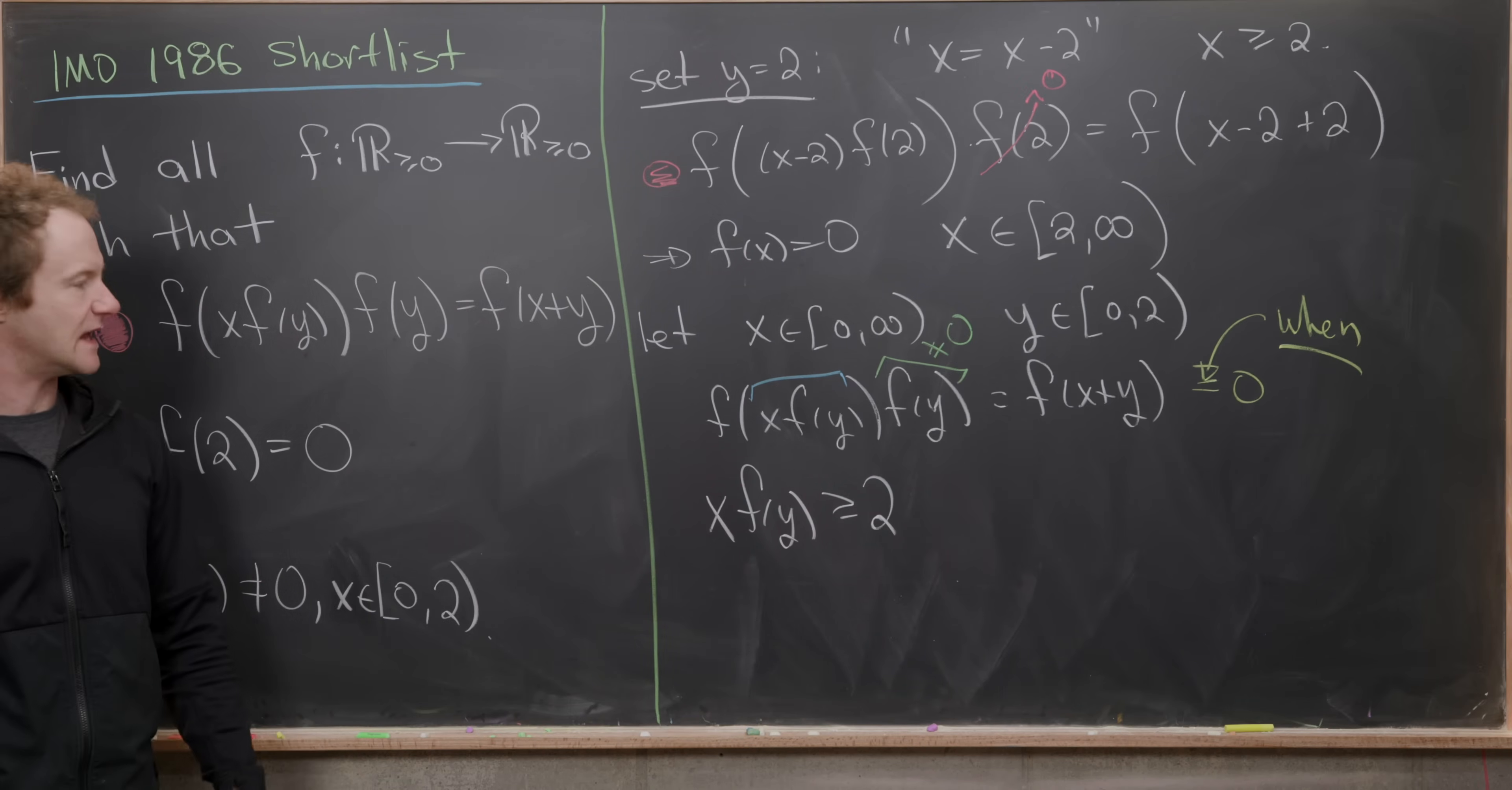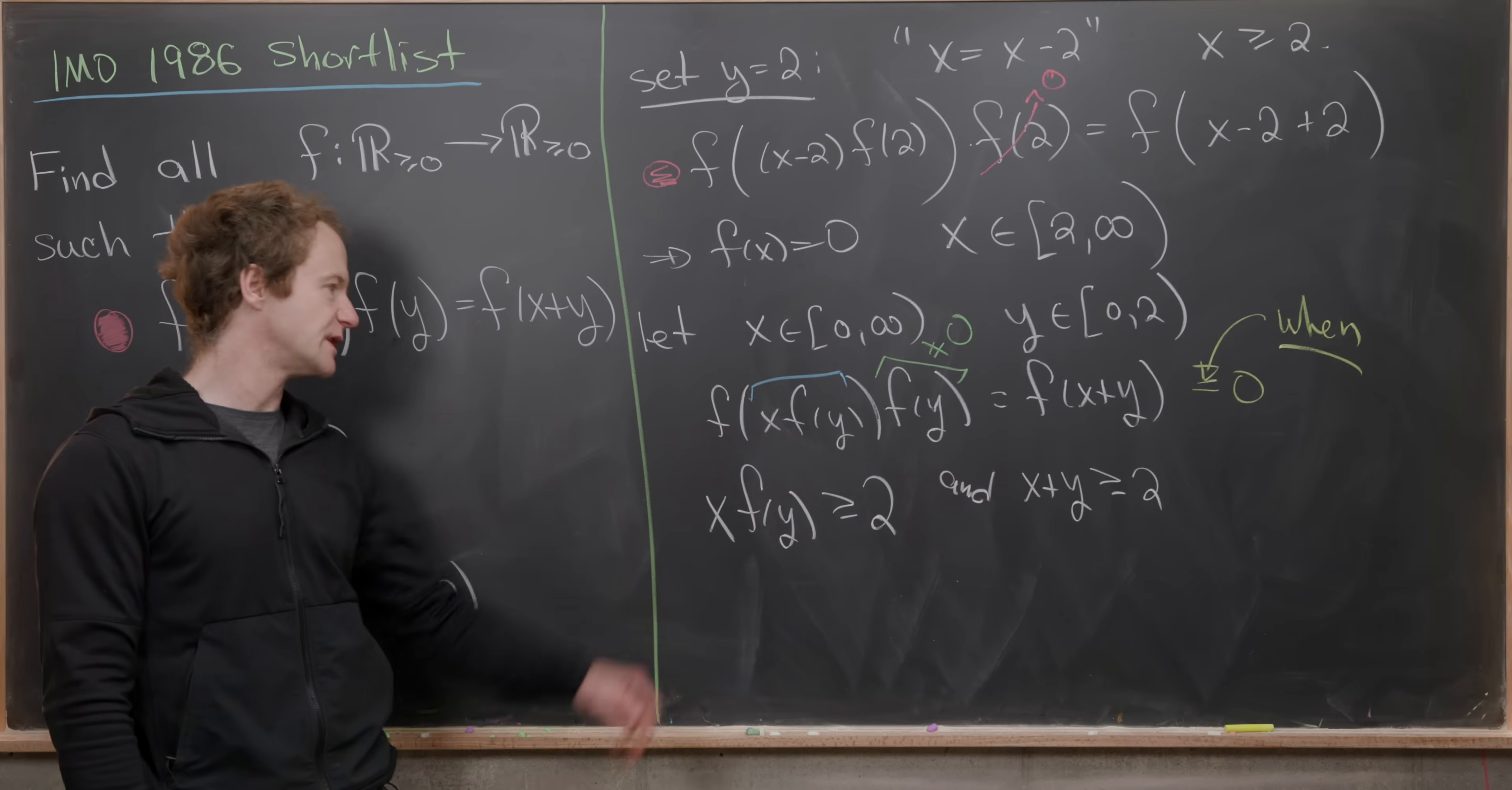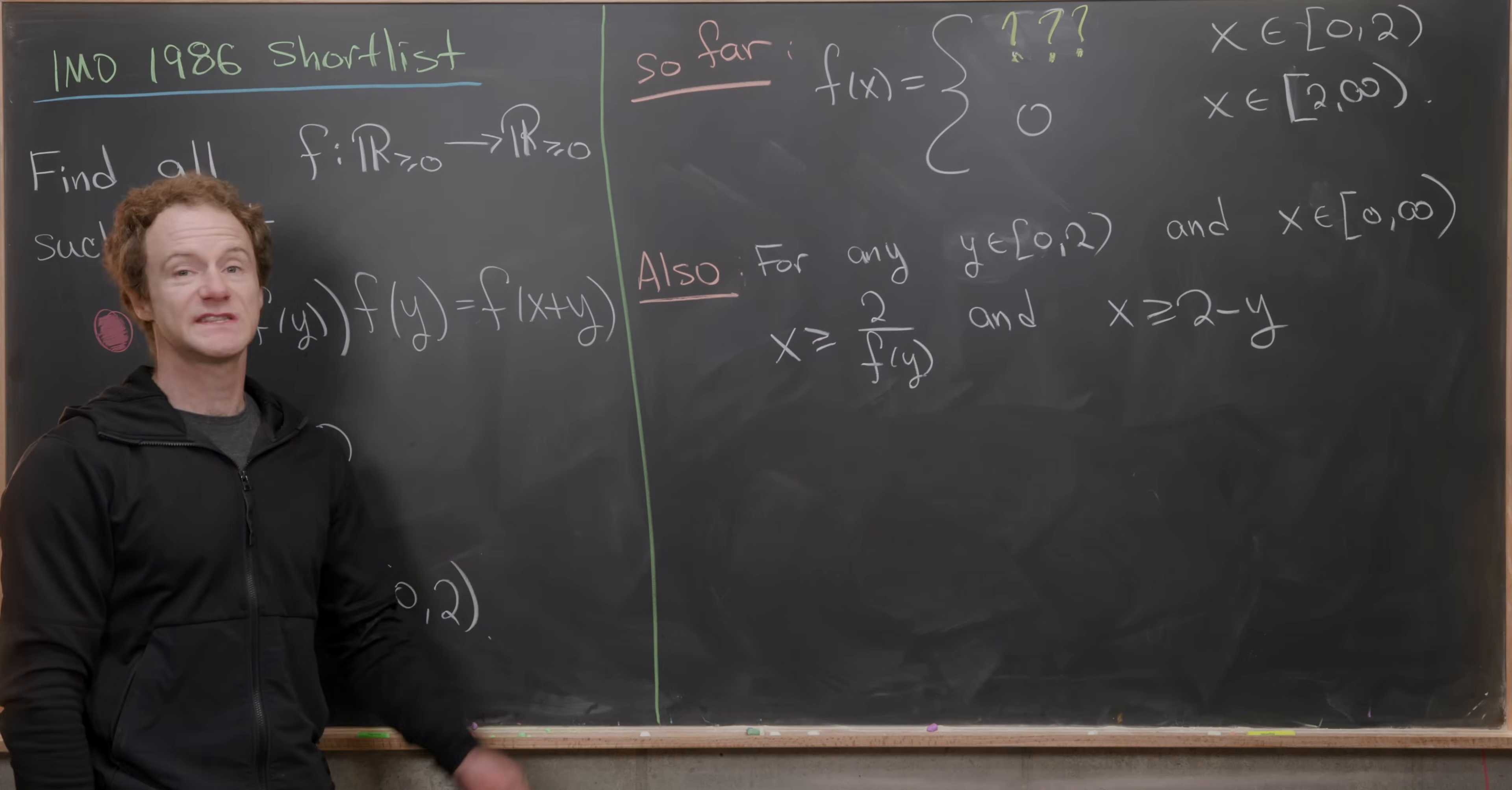But when is the right hand side equal to 0? The right hand side is going to be equal to 0 when x+y ≥ 2. So we've got this and statement. But now because we know f(y) ≠ 0 by this condition, we can divide by f(y). This tells me that x ≥ 2/f(y). And we can subtract y over here. So this means that x ≥ 2-y.